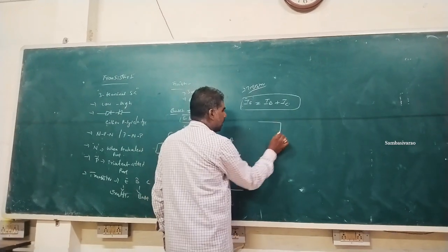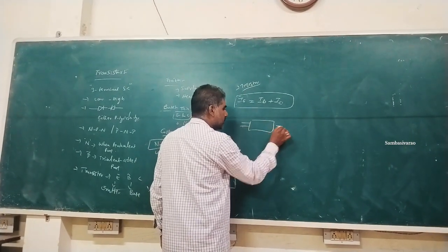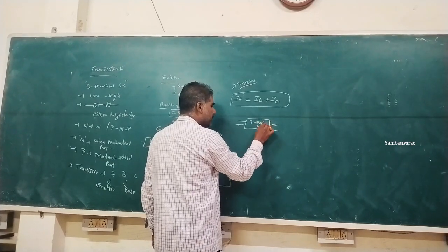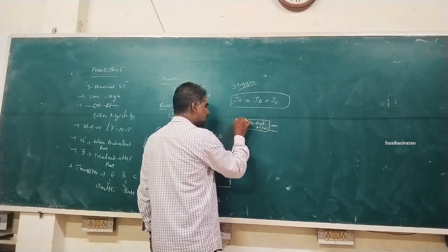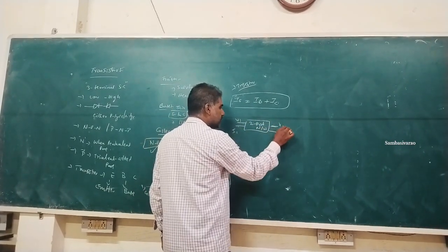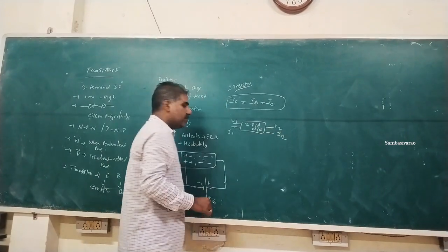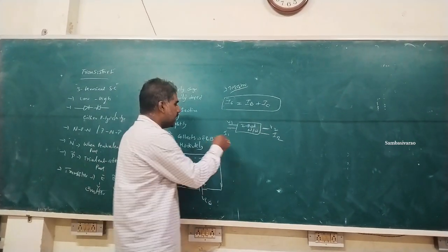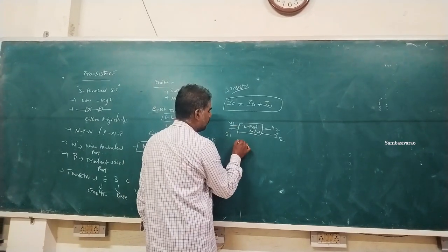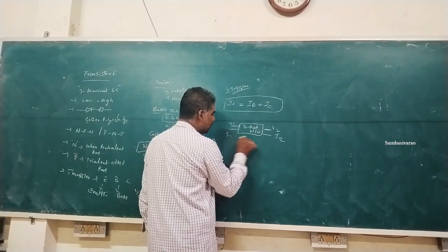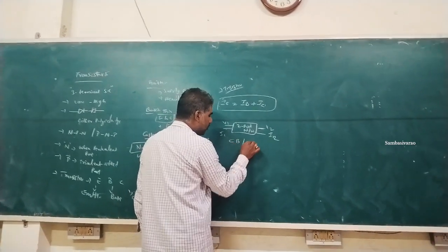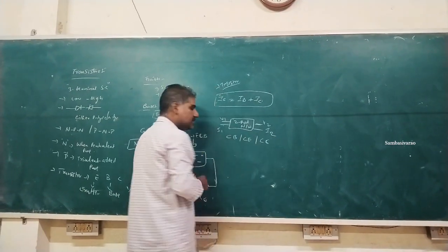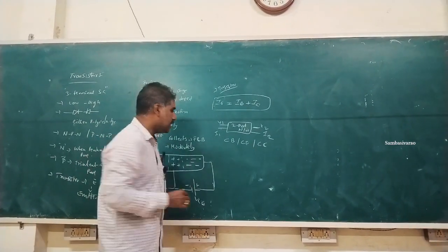The transistor can also be treated as a two-port network with four terminals: V1, I1 (input) and V2, I2 (output). To analyze the transistor, we have three configurations: common base, common emitter, and common collector.